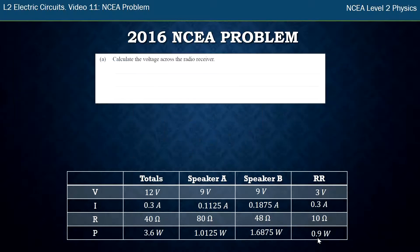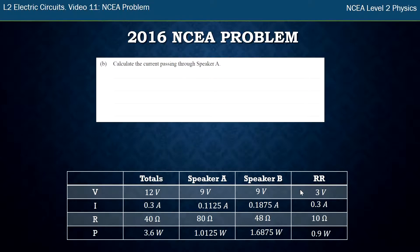Alright so I've got my whole table here and now I've got my table. I can just put the answers in. So calculate the voltage across the radio receiver. Radio receiver voltage. I've got it. 3 volts. In the exam because I've done all the work already I would just write down see working on the back page where my working is and the examiner can go and check that. The second one, the current through A, so look up A. There's the current 0.11. Got that. Again see working on the back page.